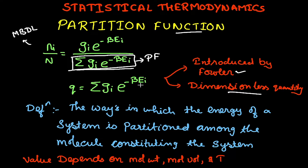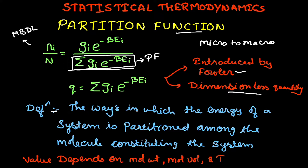This partition function correlates the microscopic properties to the macroscopic properties. Microscopic properties include energy levels, dipoles, and other such properties, while macroscopic properties include entropy, enthalpy, and so on. It can be defined as the way in which the energy of the system is partitioned amongst the molecules constituting the system, giving us an idea of how energy is distributed among the molecules.